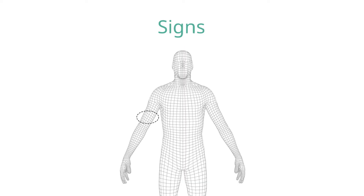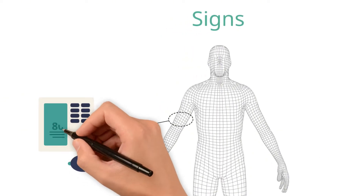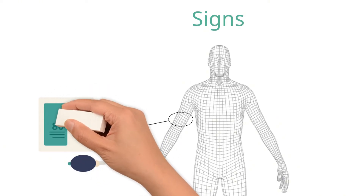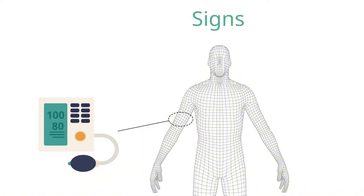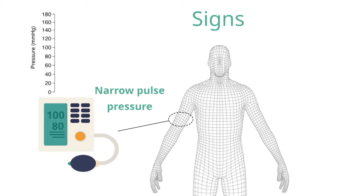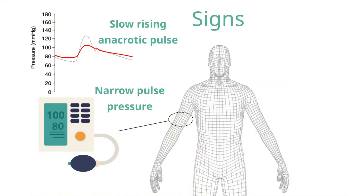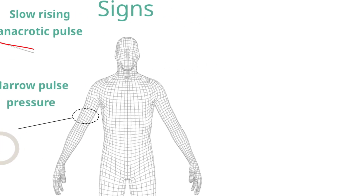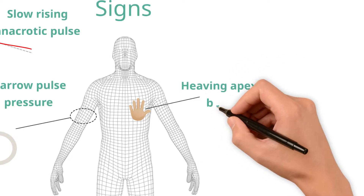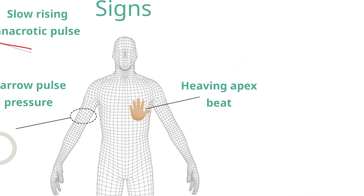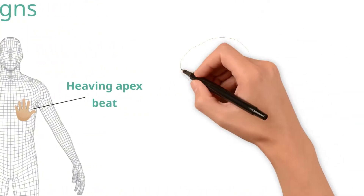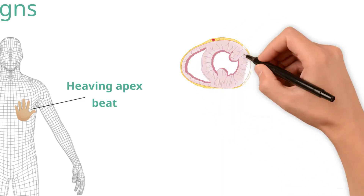When examining a patient with aortic stenosis, taking blood pressure may reveal a narrow pulse pressure — the difference between systolic and diastolic pressures — because the upstroke in pressure in systole is less pronounced. Palpation of a central pulse may reveal a slow-rising pulse, which an arterial transducer would also show to be anacrotic, with an attenuated dicrotic notch produced by closure of the aortic valve. Palpation of the chest may reveal a heaving apex beat — a sustained forceful pulsation — usually indicating underlying LV hypertrophy.